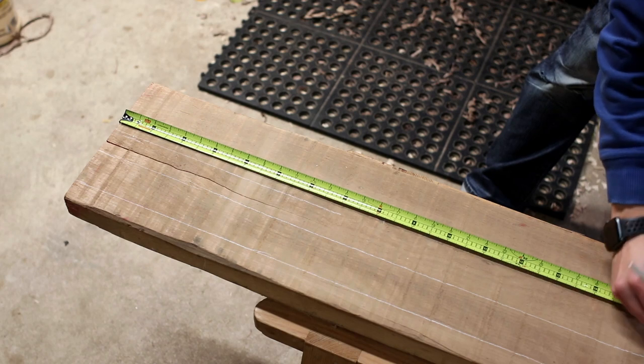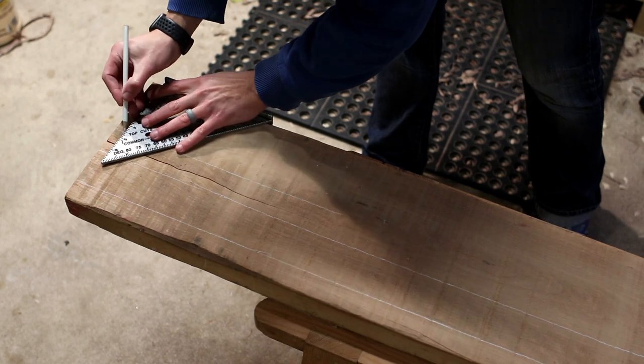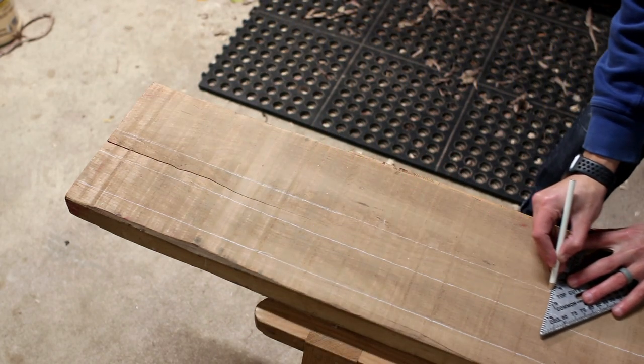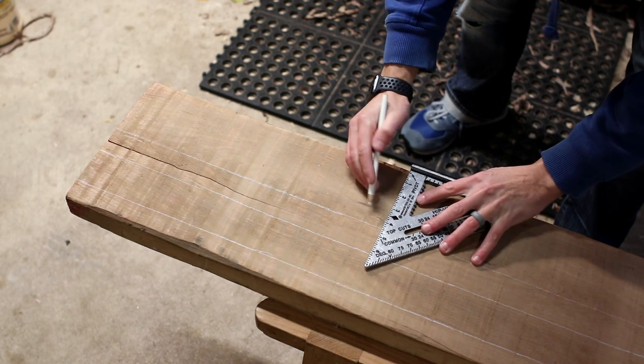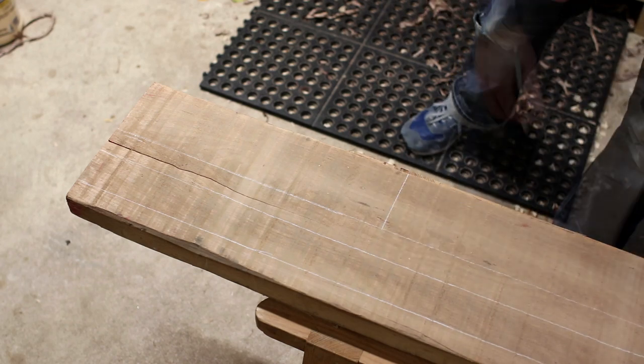Once I get the grain that I want, I go ahead and mark everything out on the face I'll be sawing from, watching out for any splits or knots like that one right down the center. These are just rough marks, so they're super quick.